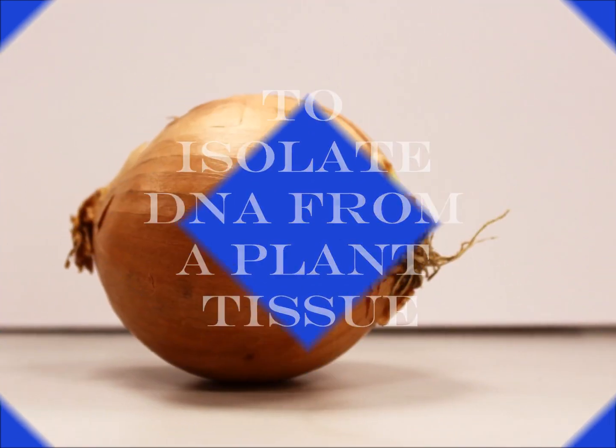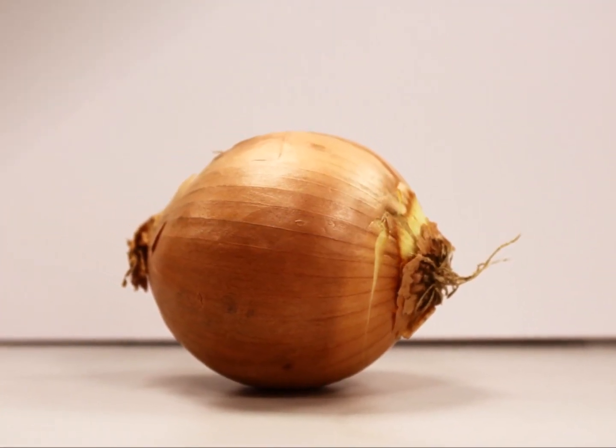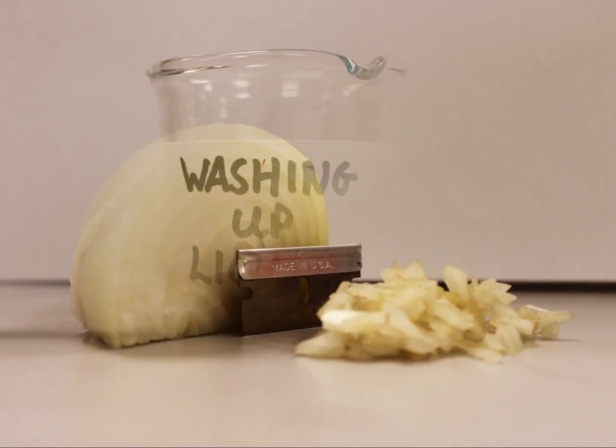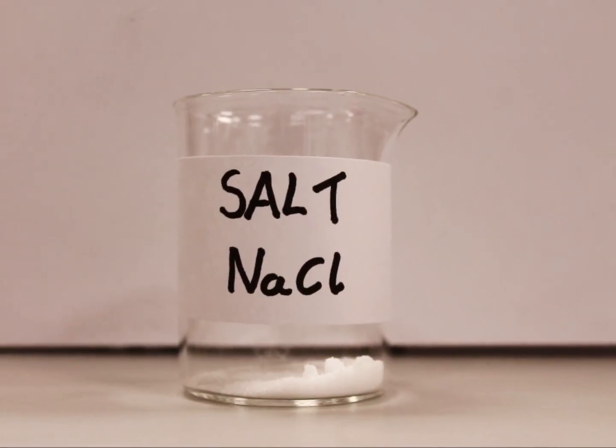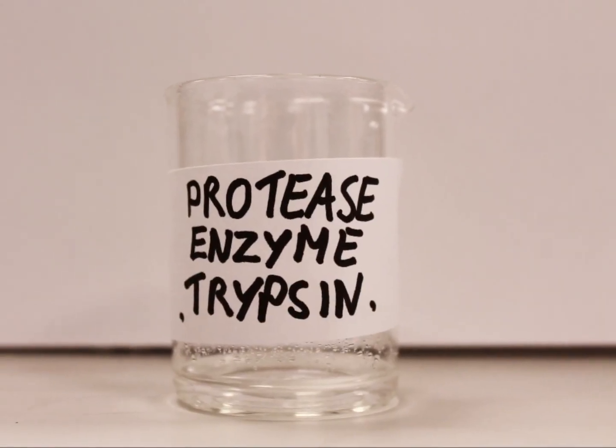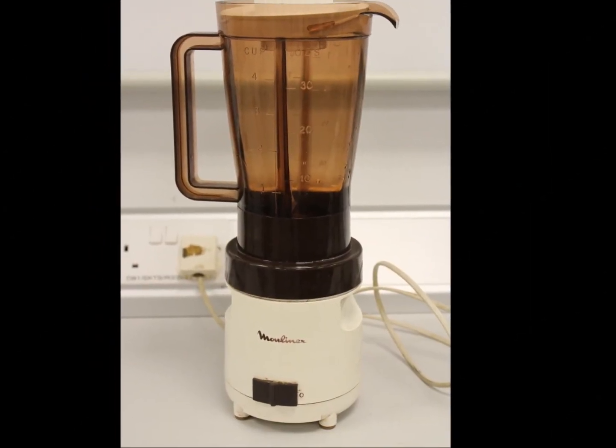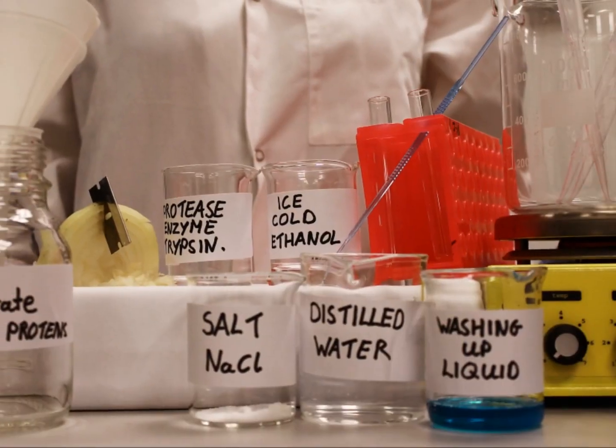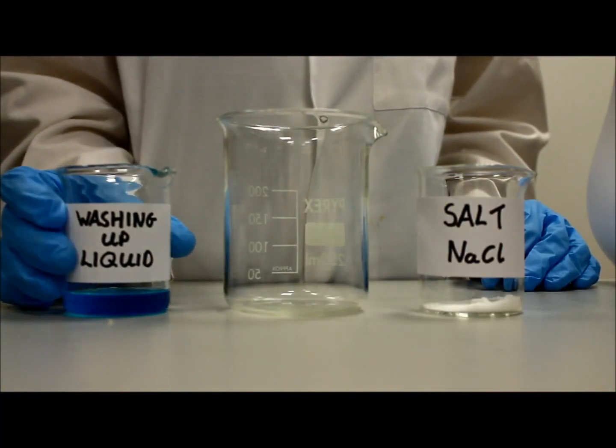Today we're going to carry out the experiment how to isolate DNA from a plant tissue extract. The very first step is to chop the onion into small pieces. This increases the surface area of the onion.